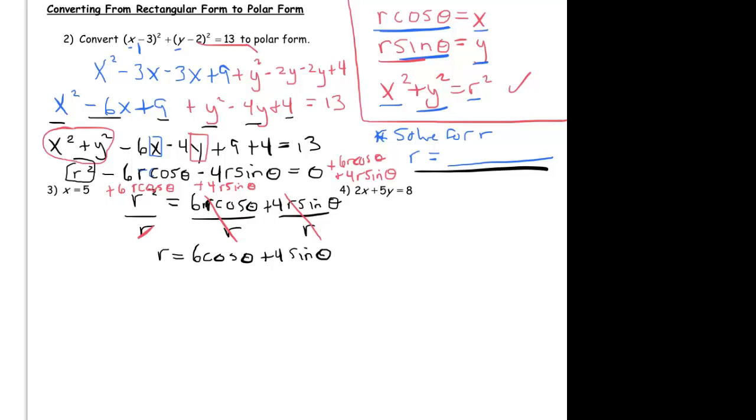And now I'm almost done, except we normally don't leave it with an r squared, we leave it in terms of r. So to get rid of this r squared you can square root, but you could also just divide by r in this case. That will get rid of these r's and it will make this left side just have one r. So a circle whose center is (3, 2) and radius of the square root of 13 looks like this in polar form.